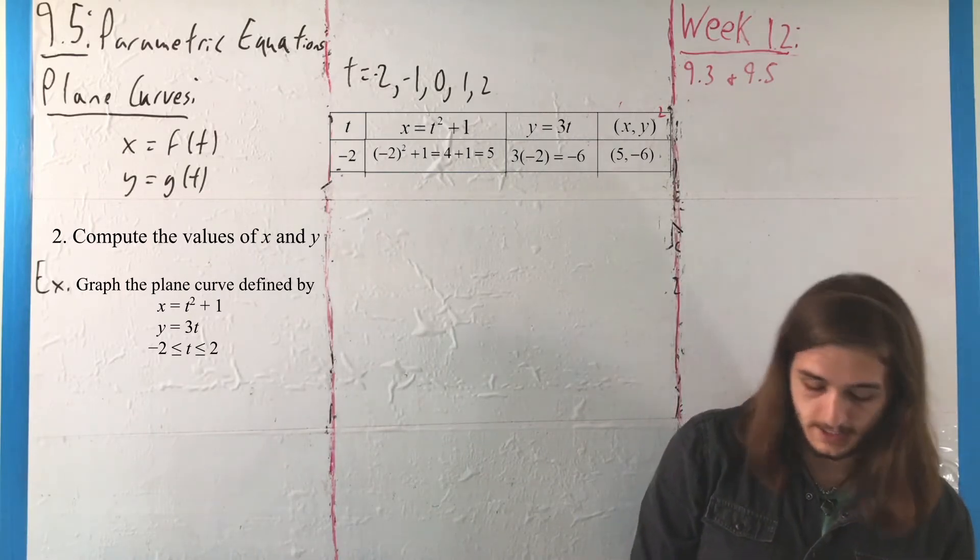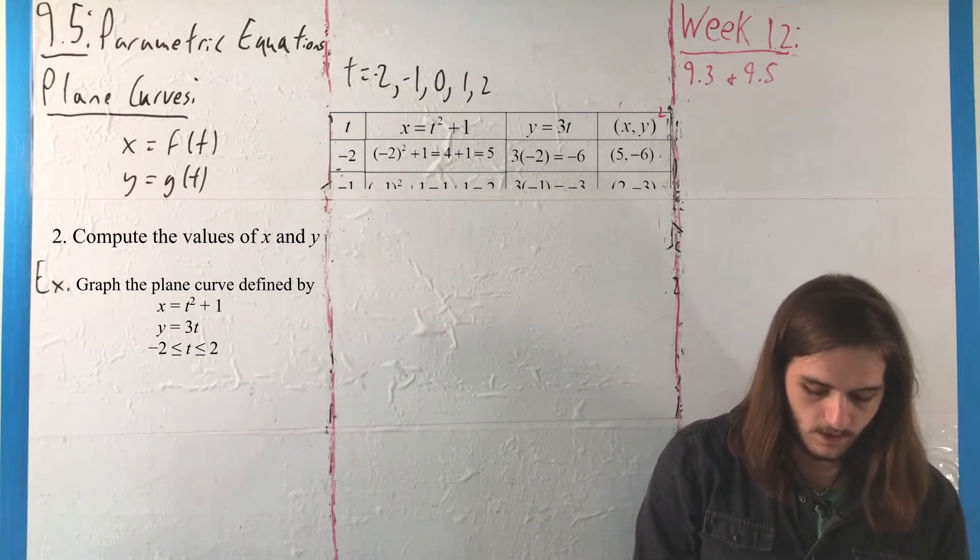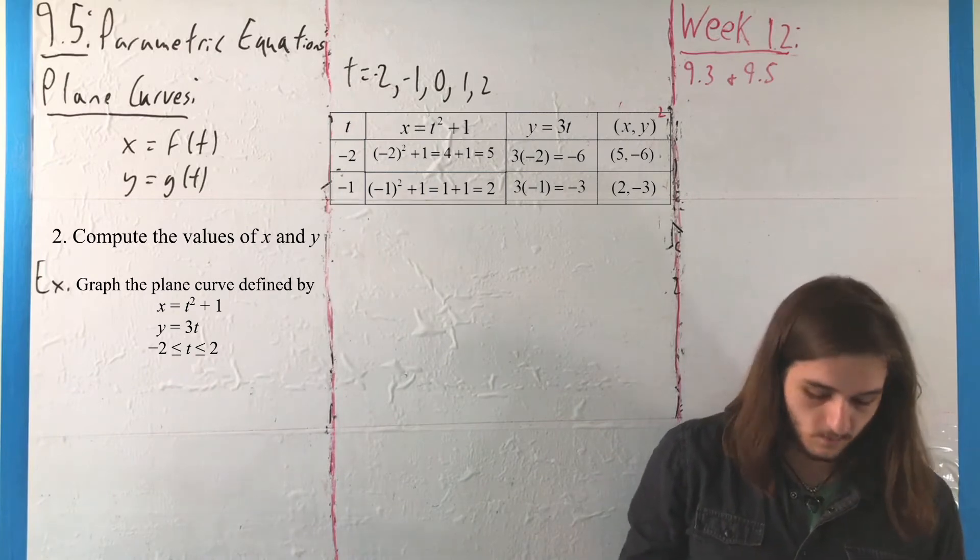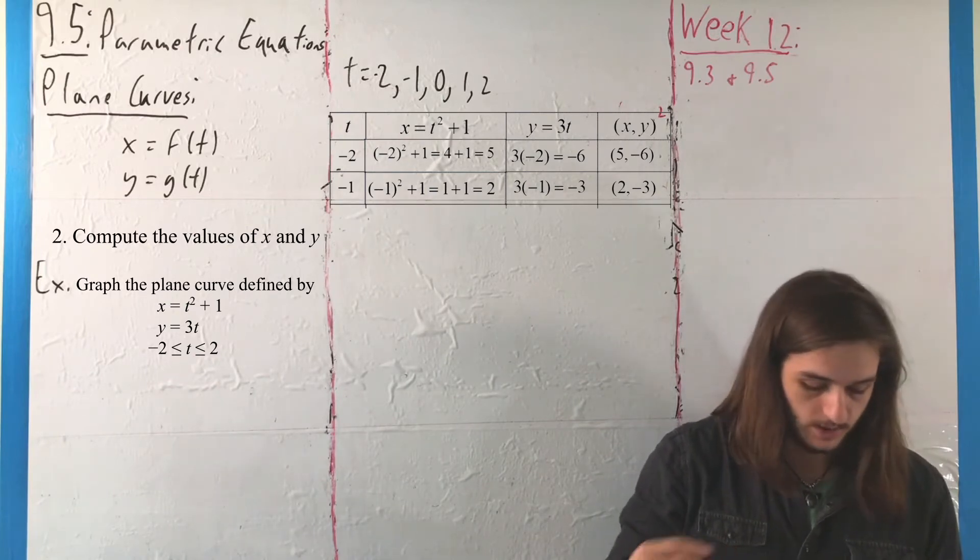At t equals negative 1, we have negative 1 squared plus 1, or 2, and 3 times negative 1, or negative 3, for the point (2, -3).